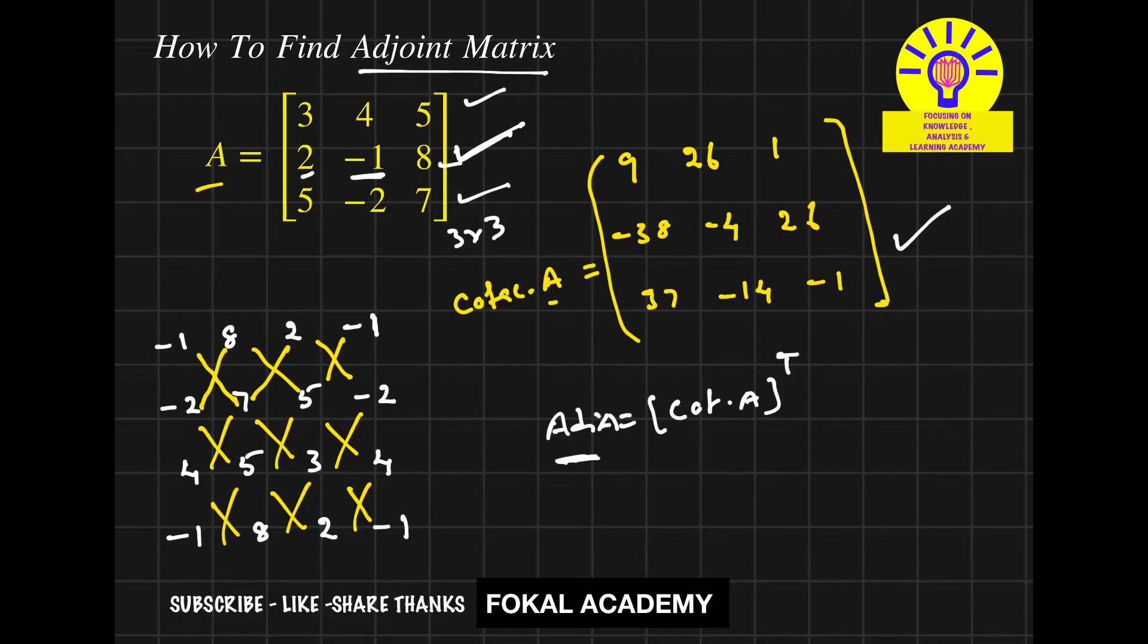So what does transpose mean? It's the change of rows and columns. So convert this first column as first row. So it becomes 9, minus 38, 37.